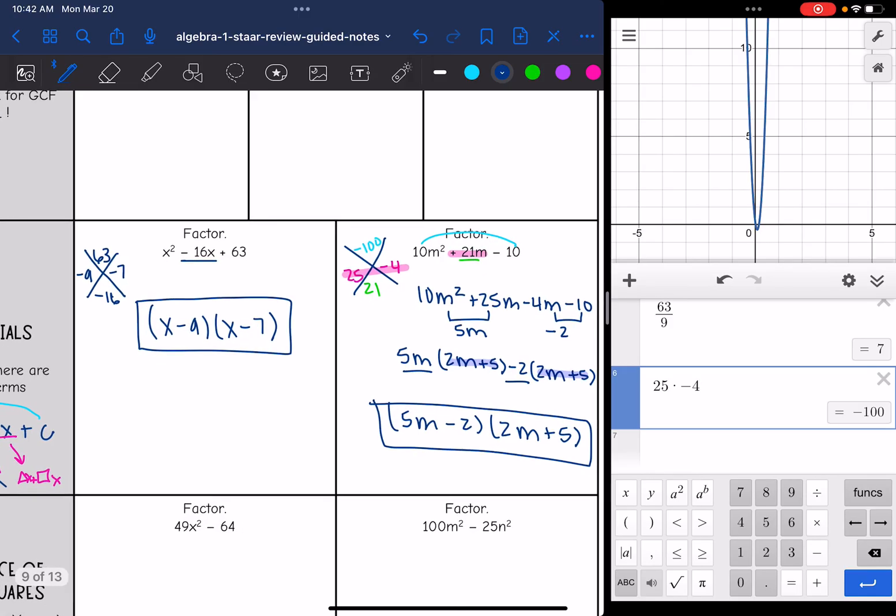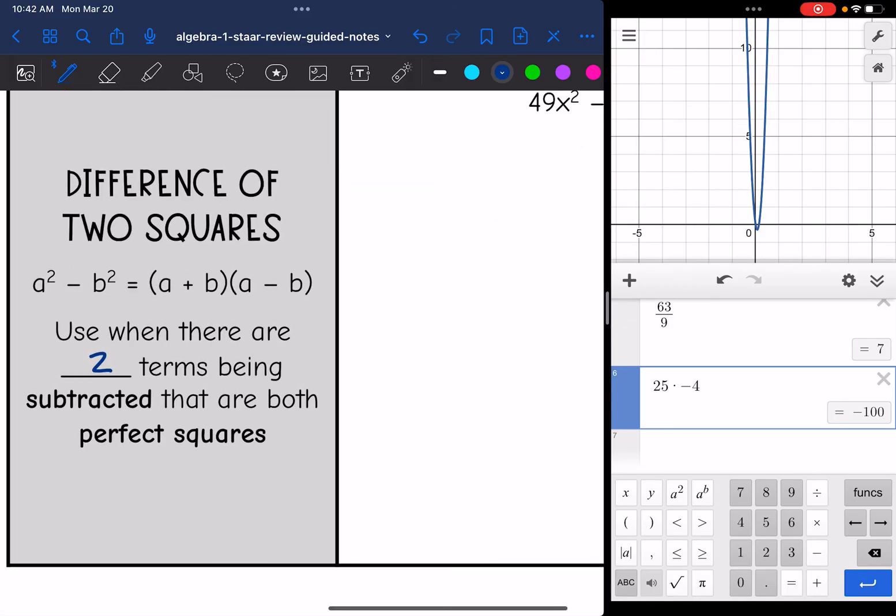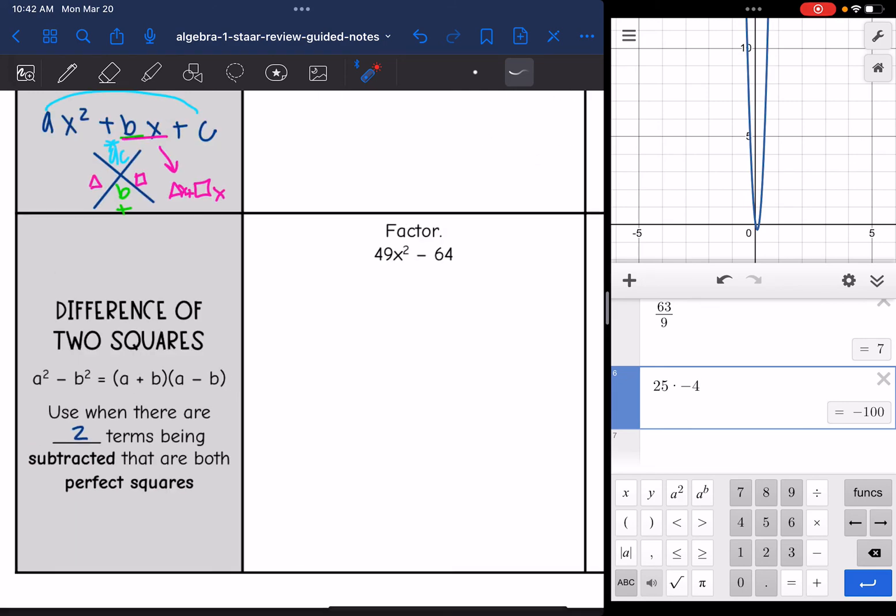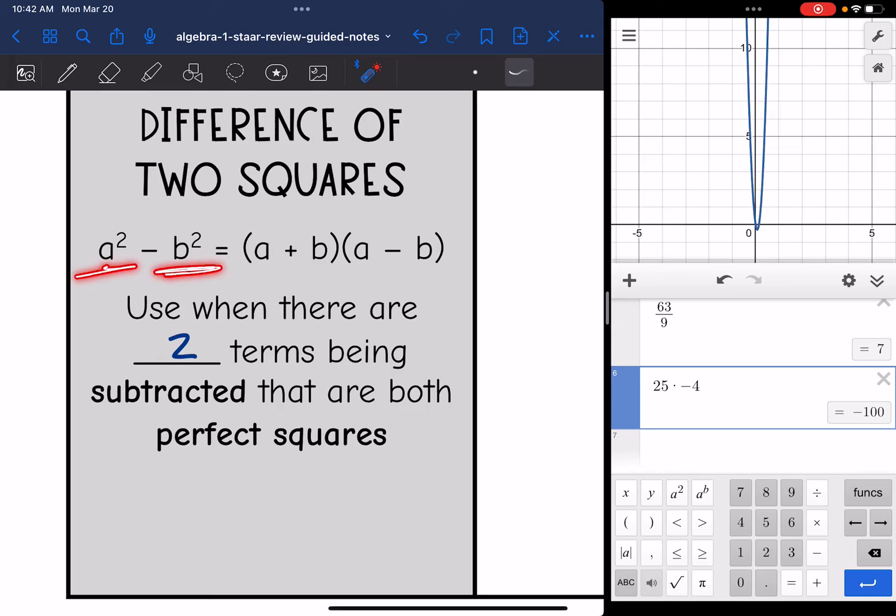Okay, then the last type of factoring you will see on your STAR test is a difference of two squares. You're going to use this pattern when there are two terms being subtracted that are both perfect squares. And remember, you'll take the square root of the first term, the square root of the second term, and then those are your numbers or your terms for the binomials. You just make one group plus and one group minus.